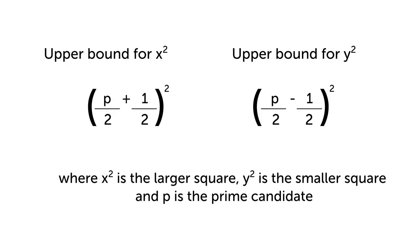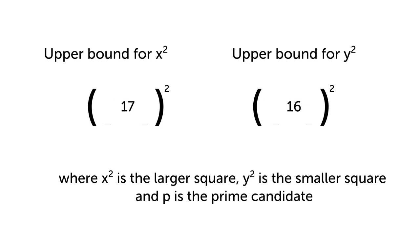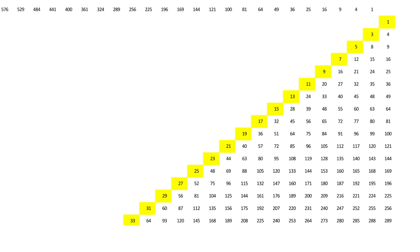If we halve the odd number, that'll always give us something and a half. We can then add a half and subtract a half to get the two consecutive numbers we need to square. Half of 33, for example, is 16.5, and if we add a half and subtract a half, we can see that 33 is definitely 17 squared minus 16 squared. We can also see that two of its factors are 17 minus 16 and 17 plus 16, or 1 and 33. If we test a number up to this bound and we only find one example where the prime candidate is the difference of two squares, then the number is prime. If it's more than once, it's a composite.